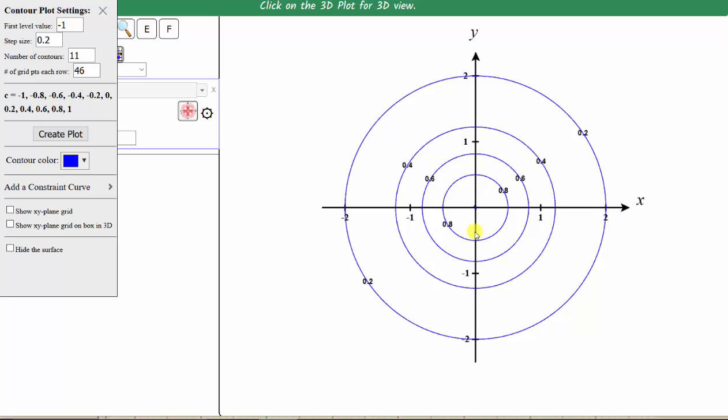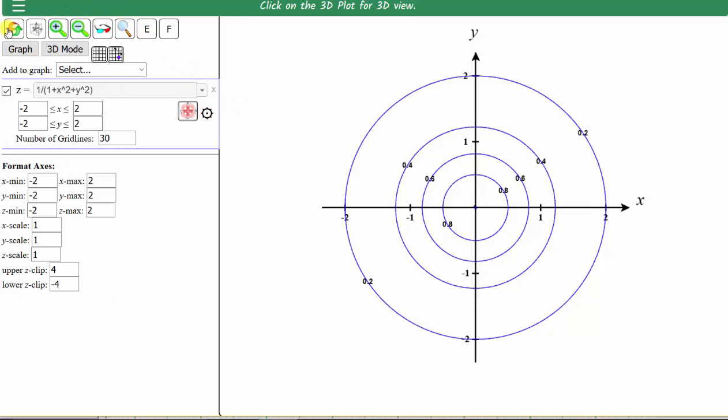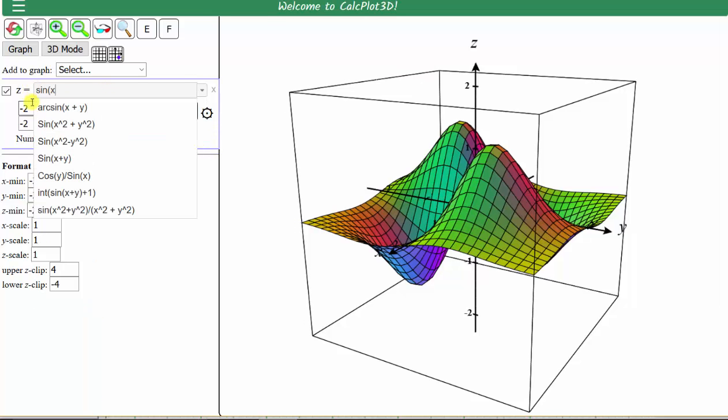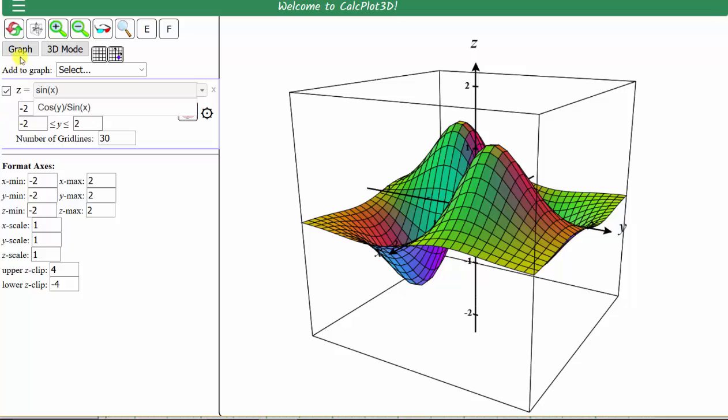Let's move on to our next function, which is f of x comma y equals sine x. So we'll go ahead and close this, reset the app, enter our function, which is z equals sine x. Click graph or press enter.